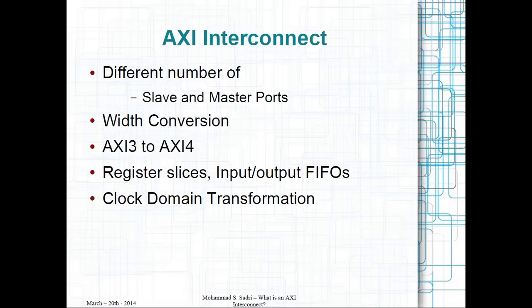AXI interconnects are very flexible. In the Vivado environment, you can easily change the number of slave and master ports of an AXI interconnect. As of the current design, you can have up to 16 masters and 16 slaves connected to one AXI interconnect. AXI interconnects are also capable of doing width conversion. For example, you can have one AXI master connected to an AXI interconnect with a data bus width of 64 bits, and on the other side an AXI slave with a data bus width of 32 bits, and the AXI interconnect handles the conversion.